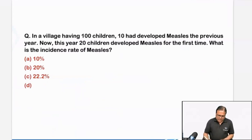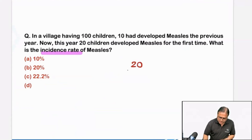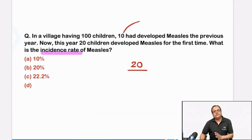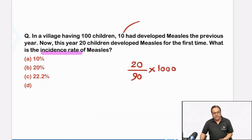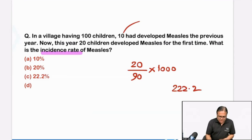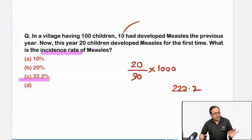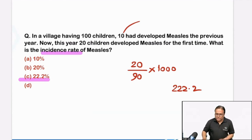Let's look at the first question. We were asked incidence rate. So quickly we apply the formula: total number of new cases upon total population at risk. Those who had already developed measles earlier were no longer susceptible. So 90 were susceptible and it is calculated per thousand, which comes to 22.2. But they asked in percentage, so that will come to 22.2%. Remember, those who have developed measles earlier or got the measles vaccine are always immune — they are no longer susceptible. The denominator of incidence always includes at-risk population only.